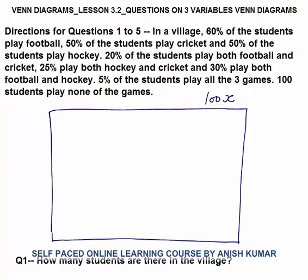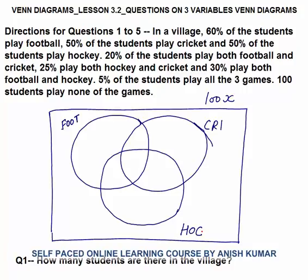This is a question of 3 variables: cricket, hockey, and football. So let's make a 3-variable Venn diagram. Foot stands for football, CRI stands for cricket, HOC stands for hockey. 60% of the students play football, meaning 60x play football. 50% play cricket, so 50x for cricket. 50% play hockey, so 50x for the hockey circle.